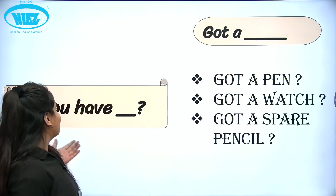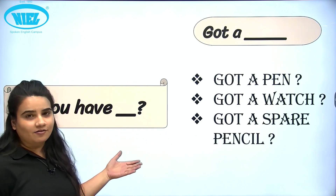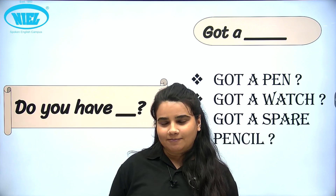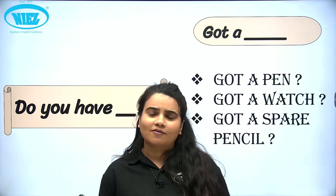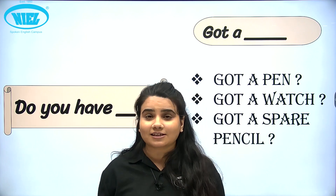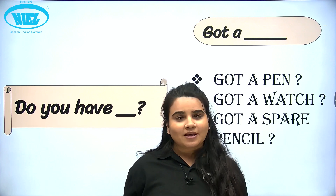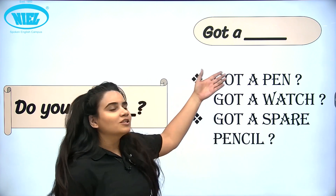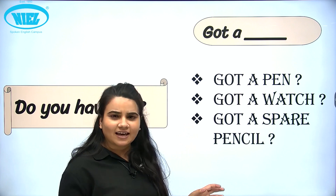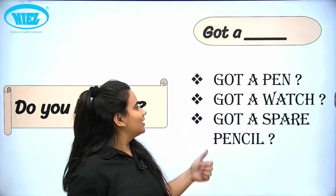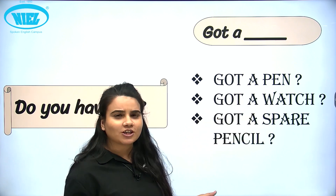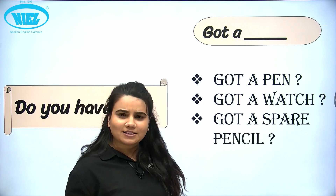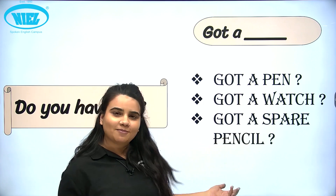Next one is 'do you have.' Usually hum aise kehte hai: do you have a pen, do you have a pencil. Ab short way mein aap isko bol sakte hai — 'got a.' Hindi mein bolte hai pen hai, so you can say: got a pen. Watch hai — got a watch. Extra pencil hai — got a spare pencil.